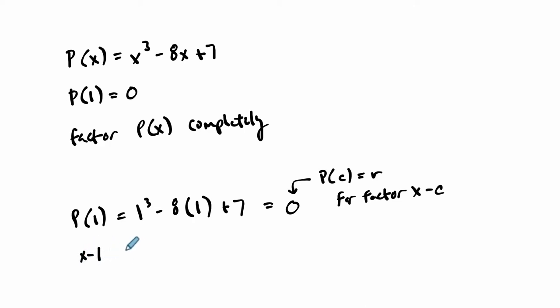So that means X minus 1 is a factor, right? There's no remainder. So X minus 1 is a factor of P of X. And this is called the factor theorem. This is the remainder theorem here. Remainder theorem. And there's the factor theorem.